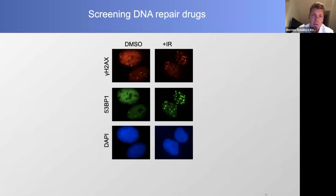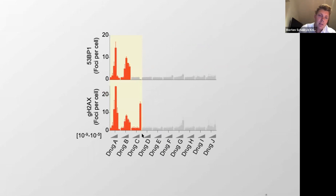A second way to look for DNA damage is to look for markers — the most popular being gamma-H2AX and 53BP1. If you treat cells with ionizing radiation, you get more DNA damage foci. Doing this, we can see certain compounds induce DNA damage with gamma-H2AX and 53BP1, but many don't. Interestingly, drug C appears to induce gamma-H2AX but inhibit 53BP1 — a biased DNA damage activation — and we're also looking into this.